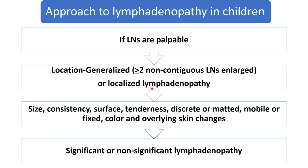Once you differentiate between these two, you have to check the size of the lymph nodes, its consistency, surface, and whether tenderness is present or not. Are the lymph nodes discrete or matted, mobile or fixed to the underlying tissue? Check the color and overlying skin changes — for example, erythema or any fistula or sinus formation. According to all these features, we label it as either significant or non-significant lymphadenopathy.